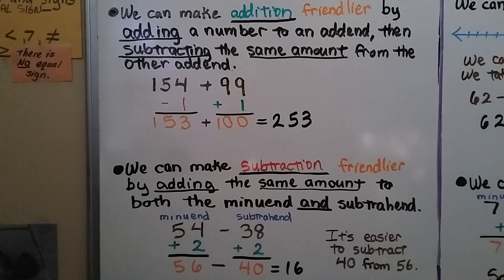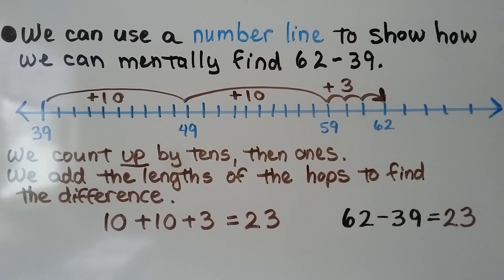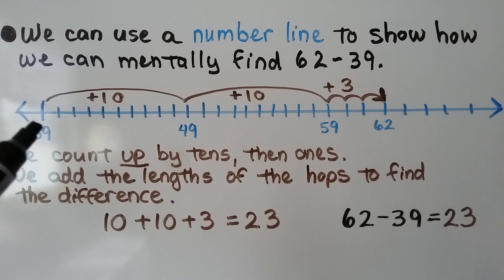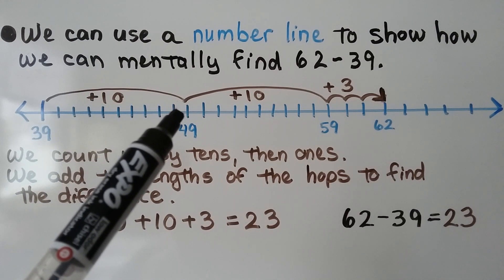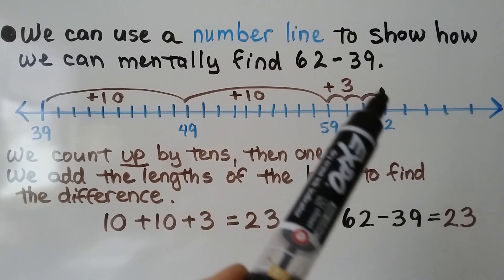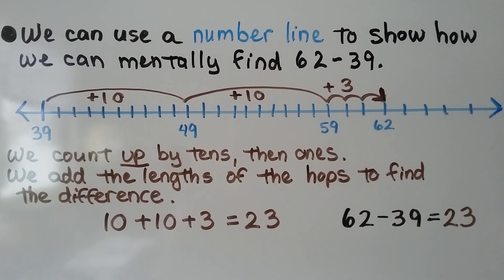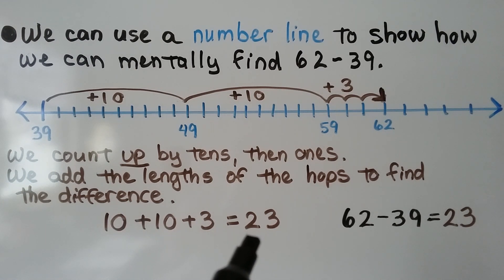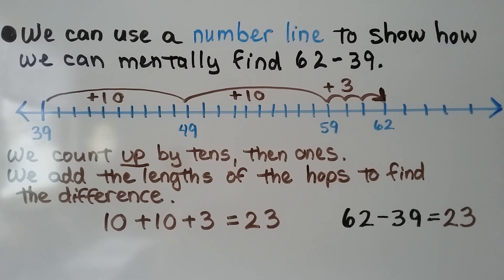We can use a number line to mentally find 62 minus 39. We start at 39, the subtrahend, and count up by tens: 10 brings us to 49, another 10 brings us to 59, then we count up 60, 61, 62 — that's 3 more. We add the lengths of the hops: 10 plus 10 plus 3 equals 23. So 62 minus 39 equals 23.